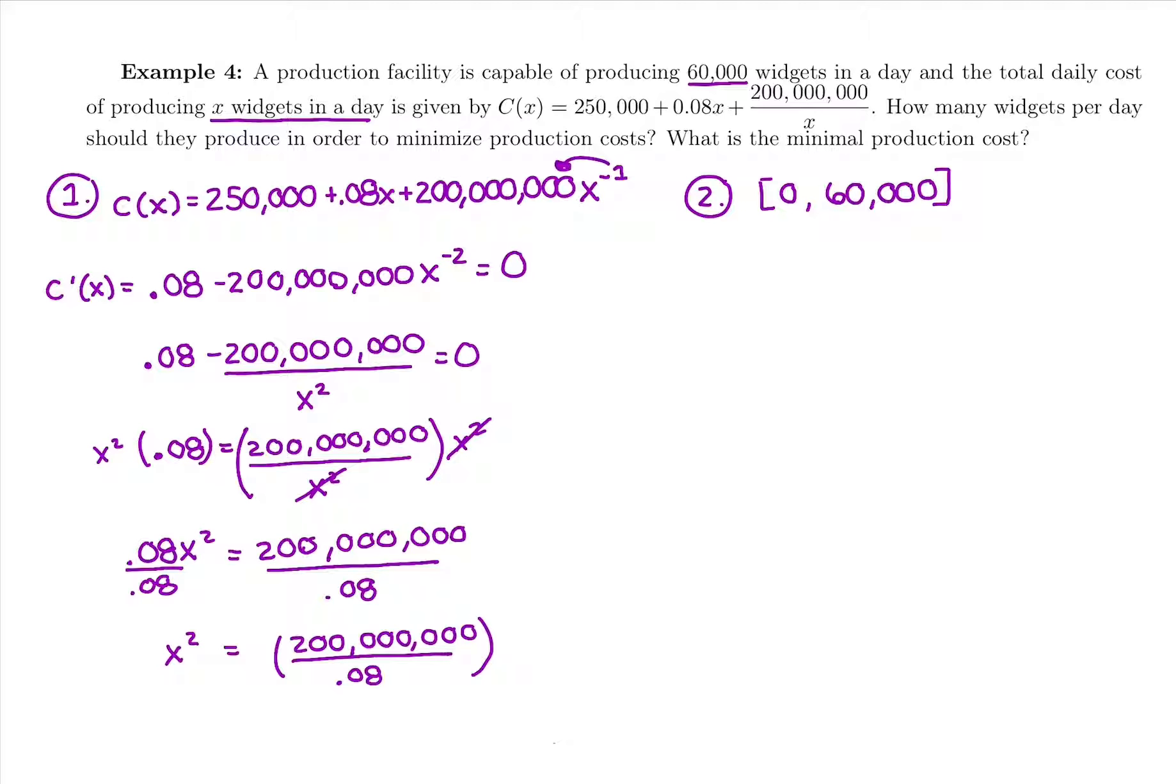Now I'm ready for my last step. I want to get x by itself. Right now it's squared, so I'm going to take the square root of both sides. Remember, we're going to do plus or minus the square root of any number. I'm going to grab my calculator and plug in this huge number, the square root of 200,000,000 divided by 0.08, and I get positive 50,000 and negative 50,000, plus or minus the square root.